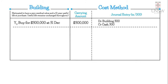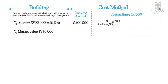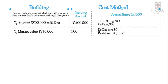In year one, an independent valuer tells us the market value has increased to $360,000. Under the cost method, we can't record increases above the original book value. We're only concerned if the carrying amount falls below market value, which would require recording impairment. We record depreciation using the straight-line method: $300,000 divided by 10 years, so debit depreciation expense $30,000 and credit accumulated depreciation $30,000. This gives a carrying amount of $270,000, which is lower than market value, so there's no impairment.